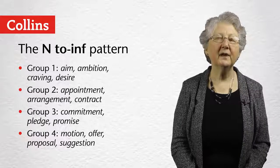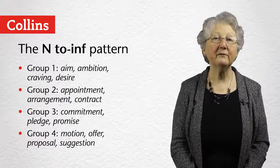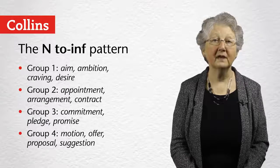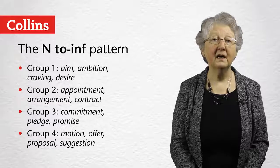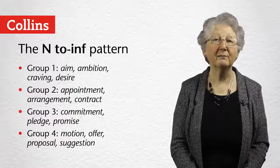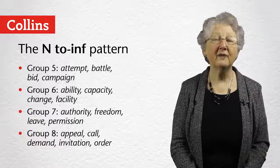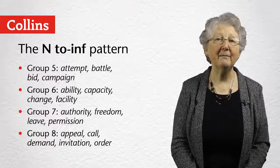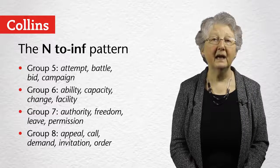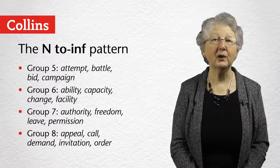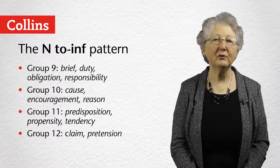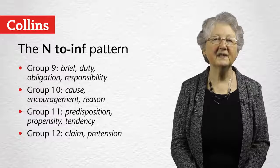Nouns followed by a to-infinitive — and we have 12 groups. Group 1: aim, ambition, craving, desire, and other similar nouns. Group 2 is about appointments and arrangements. Group 3 is about promises and pledges. Group 4 is about official things like offers, proposals, and suggestions. Group 5 is about attempting to do something, and group 6 about ability or capacity. Group 7 is about authority and freedom, and group 8 about asking for something — an appeal, a call, a demand.